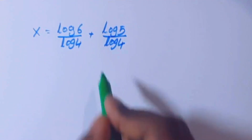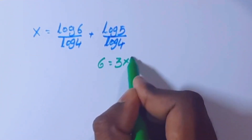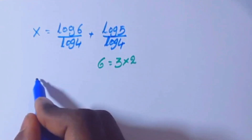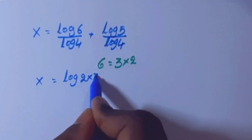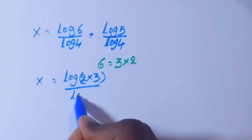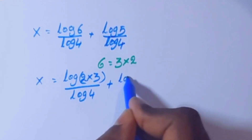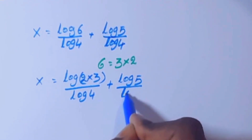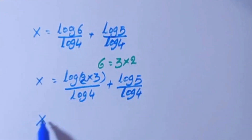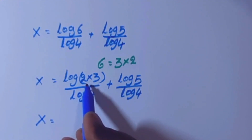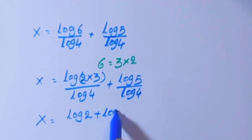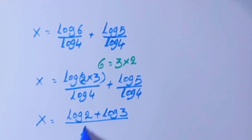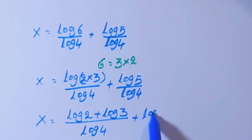Now 6 can be written as 2 times 3, so log 6 equals log(2 × 3). Applying the product rule again, x equals (log 2 plus log 3) divided by log 4, plus log 5 divided by log 4.